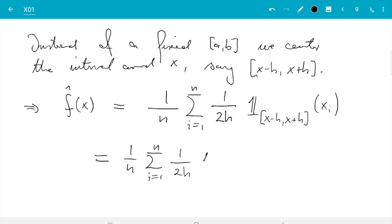Then I want to rewrite that a bit further. So that's 1/n sum from i=1 to n, 1/(2h) indicator function, and I move the x into the argument. So I can say [-h, +h] here if here I write x_i minus x. And that is true because if x_i minus x is between minus h and plus h, then x_i itself is in [x-h, x+h].